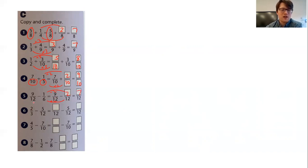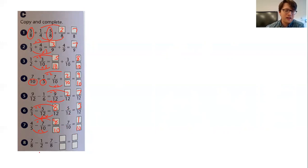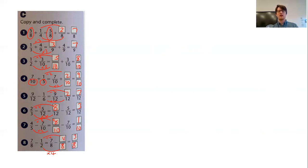Two thirds and five twelfths — three and twelve both go into twelve, so that's going to be my lowest common denominator. To get from three to twelve, times by four, so do the same at the top — two times four is eight. So we get eight twelfths subtract five twelfths is three twelfths. And then here, five and ten — the lowest common denominator is going to be ten — five times two gives me ten, so eight tenths subtract seven tenths is one tenth. Finally for these questions, two goes into eight, so I'm going to make eight my lowest common denominator. Two times four is eight — do the same to the numerator — half is the same as four eighths, so seven eighths subtract four eighths is three eighths.